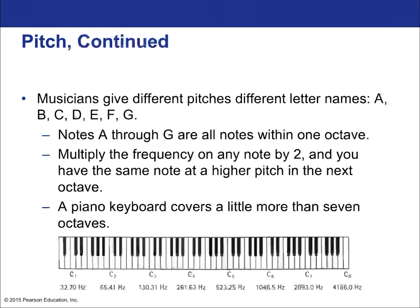Musicians give pitches different letter names — those are A, B, C, D, E, F, and G. The notes A through G are all notes within one octave. Multiply the frequency of any note by two and you have the same note at a higher pitch in the next octave. A piano keyboard covers a little more than seven octaves, and we can match up actual frequencies all the way down at the very low 32 hertz, all the way up to something like 4,186 hertz.